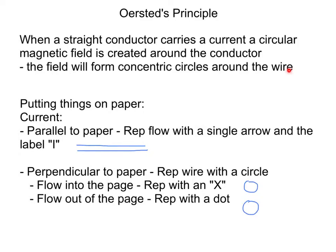So, we need ways to represent these so that we can draw them easily. It's not always easy to put 3D onto paper, so we need some representation. When we represent current, it can be done in a couple of ways. Sometimes it'll be parallel to the paper. So this is my wire drawn parallel.